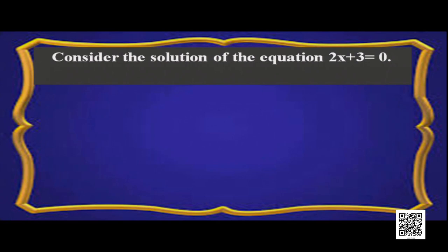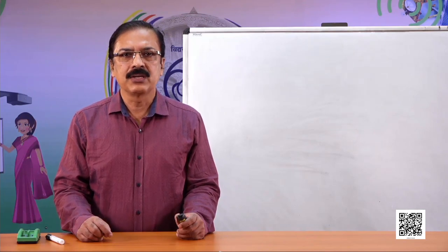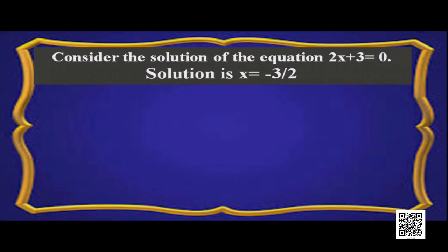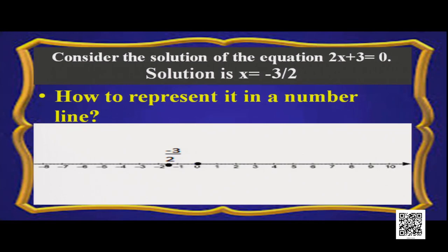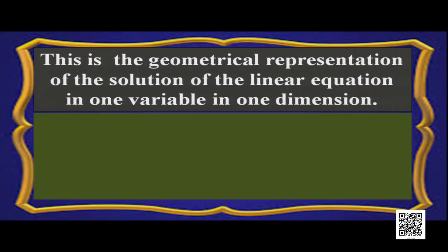Linear equation in two variables: any equation in the form ax plus by plus c equal to 0 is said to be a linear equation in two variables. The solution is the values of x and y for which the equation is satisfied. Consider the equation 2x plus 3 equal to 0. This has the unique solution x equal to minus 3 by 2, which we represent on a number line between minus 1 and minus 2.